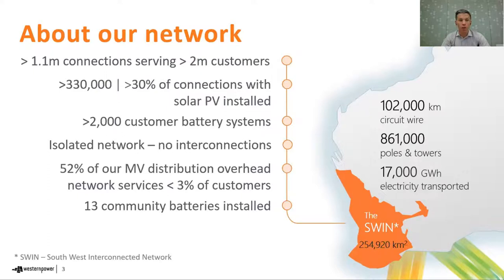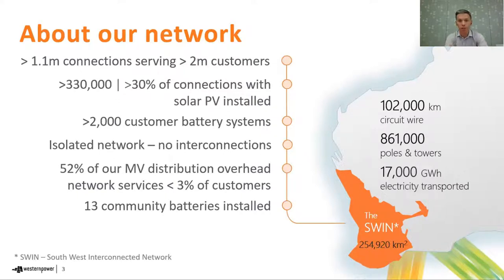We're seeing an uptake of behind-the-meter batteries, but it is on the slower side — certainly relative to the amount of solar PV, we've got over 2,000 behind-the-meter customer systems connected at the moment. One of the unique characteristics of the SWIS is it is an isolated network with no interconnection, so any excess solar is limited to what we can do within the current SWIS network. Another unique characteristic is that 52% of the medium voltage distribution overhead network serves less than 3% of the customers, which feeds into our broader strategy. We've also got 13 community batteries currently installed and operating on the SWIS.